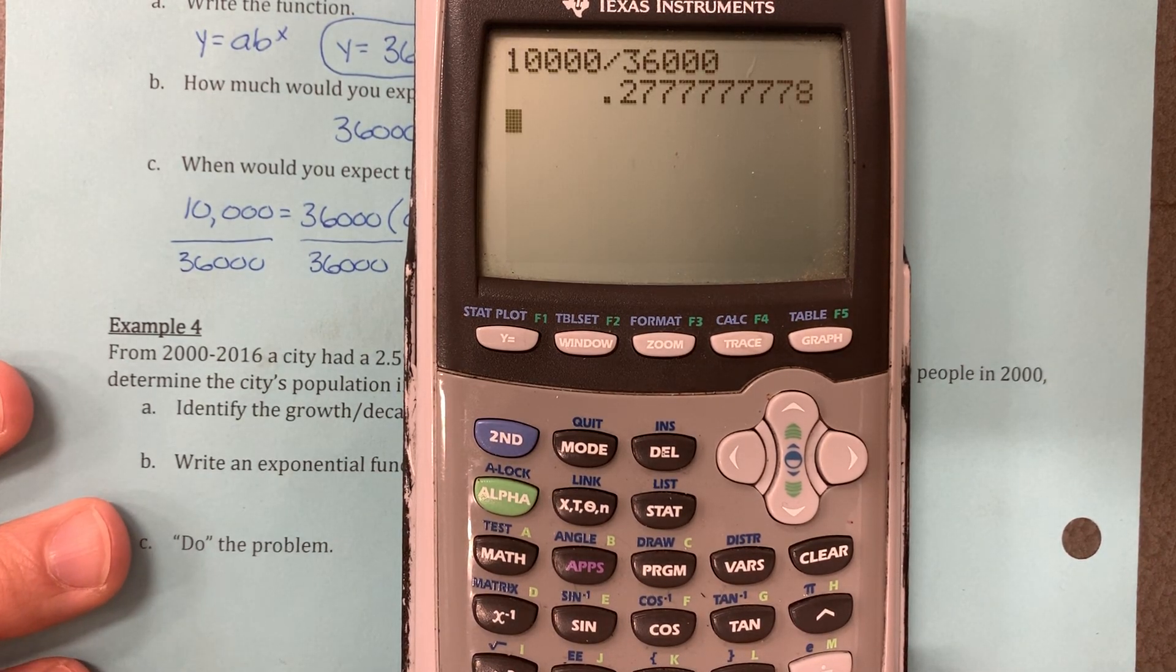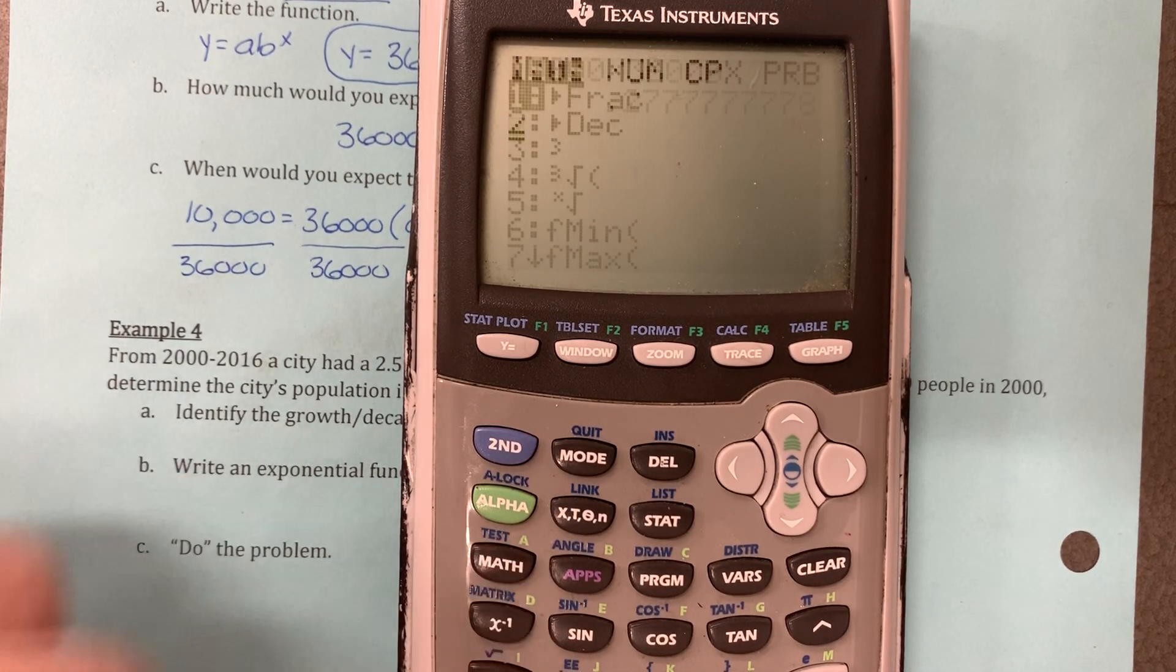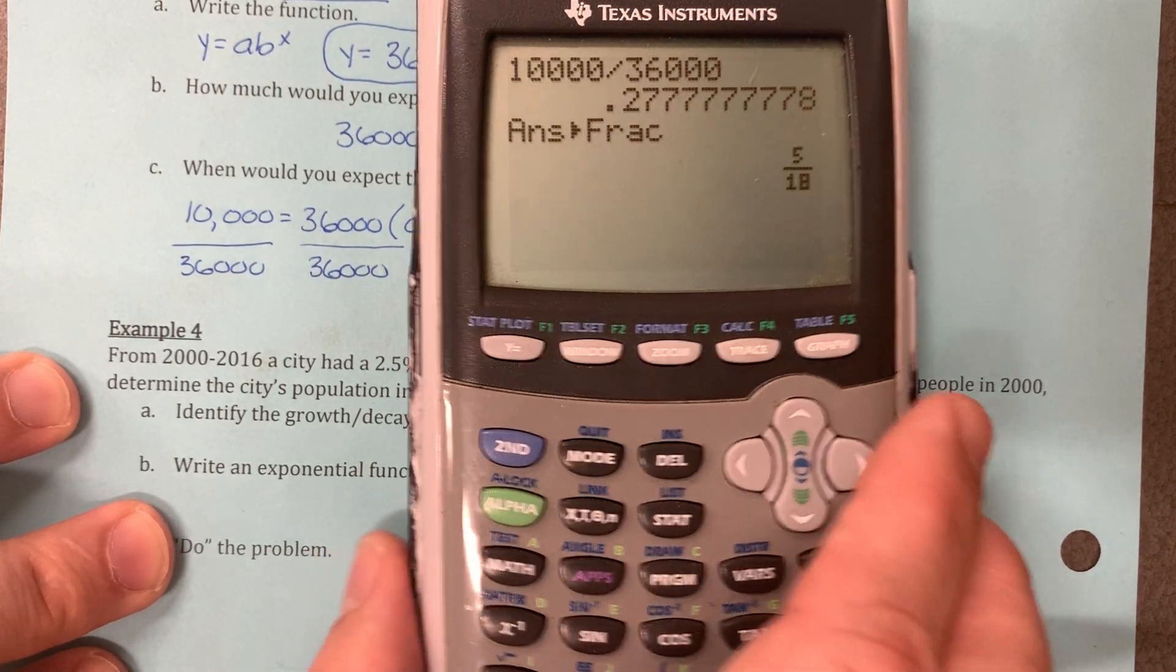Now, I'm going to show you guys that when you divide that in the calculator, 10,000 divided by 36,000, you get this long, nasty-looking decimal. If you push math, enter, enter, it'll convert it to a fraction for you. And that'll be 5 18ths.